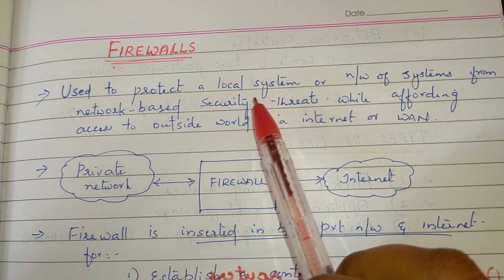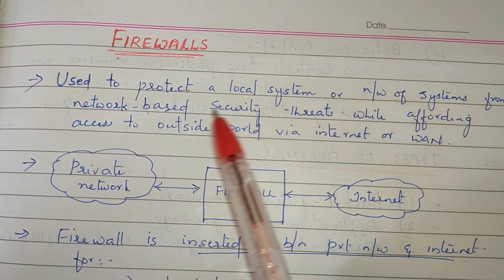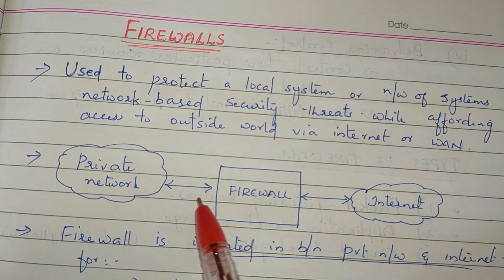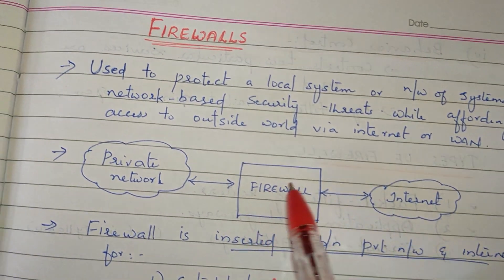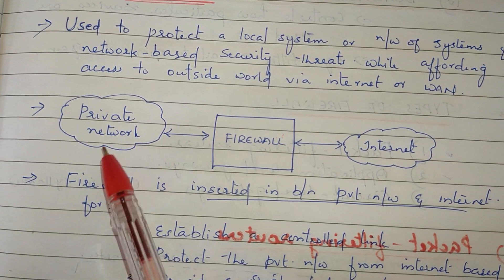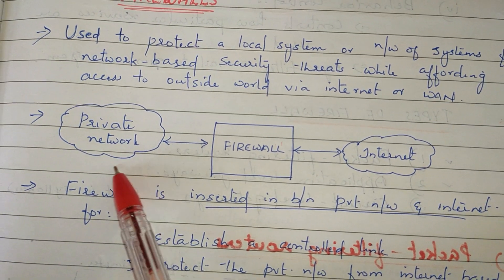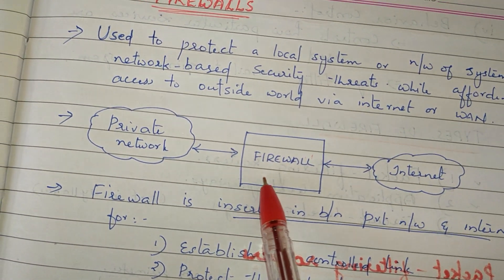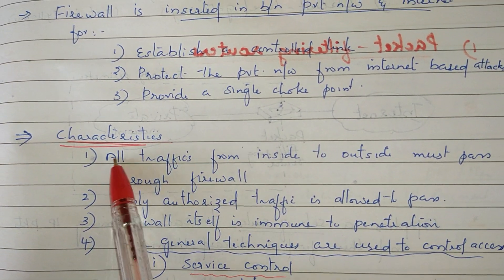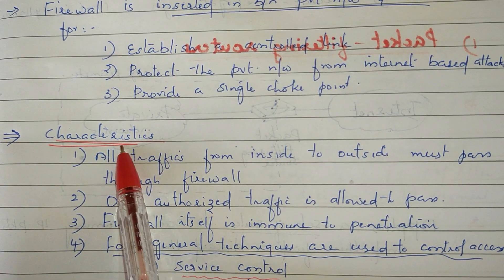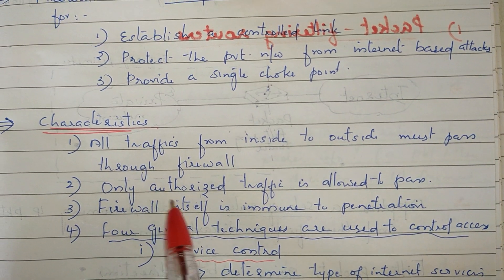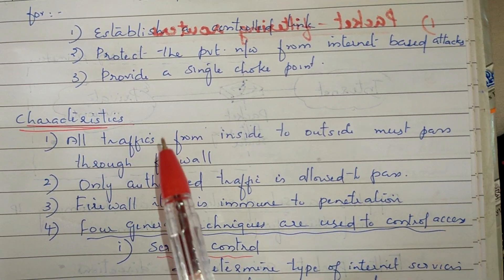We will insert the firewall in the local system or group system. We will insert the firewall between the private network and the internet network. So we will establish a secure connection and control link. That is why we will protect against internet-based attacks. That is why we provide a single choke point. If you have any traffic, the firewall will pass it. The firewall itself is immune to penetration.